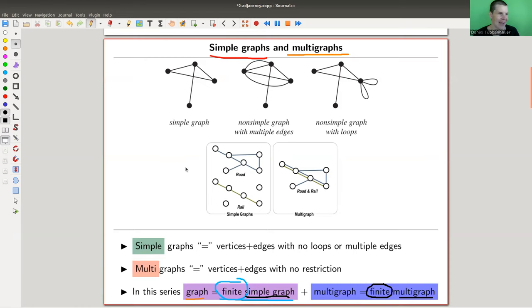And simple just means I don't have any no loops, no loopies, and I have no parallel edges. In some sense, you could think of it like I have simple graphs, I have a road system and I have a rail system. And I consider them separately, so that I have a simple graph where every edge between two vertices is unique, and you don't have any of those funny loopy things.